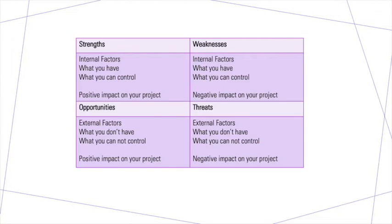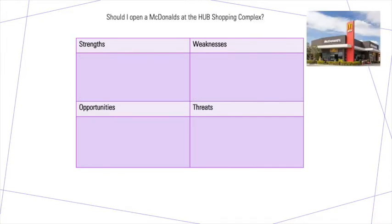Let me give you an example to talk you through this — you can apply this to a research project, but I'll do a research project example afterwards. Should I open a McDonald's at the hub shopping complex? Your mouth is probably watering just thinking about it — wouldn't it be great to have something so close to your school? But there are some issues here, so we're going to do this as a SWOT analysis. I'm deciding whether I should quit my job as a teacher and start a McDonald's franchise in Aberfall Park.